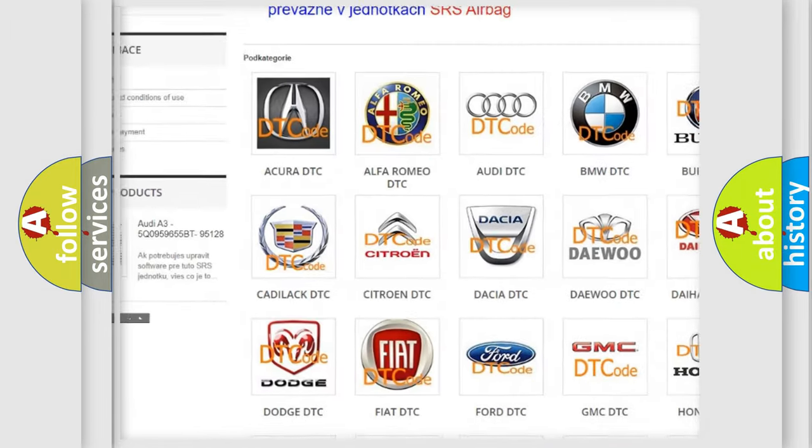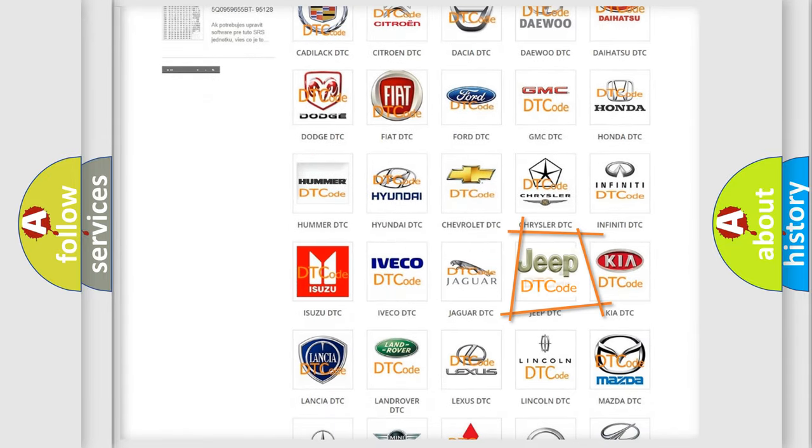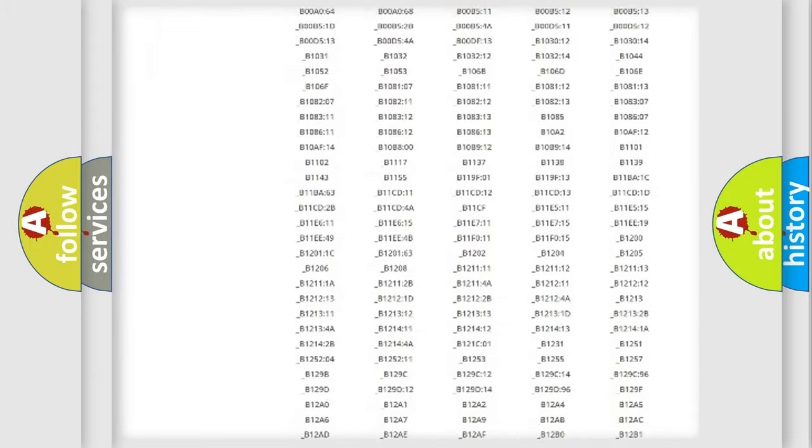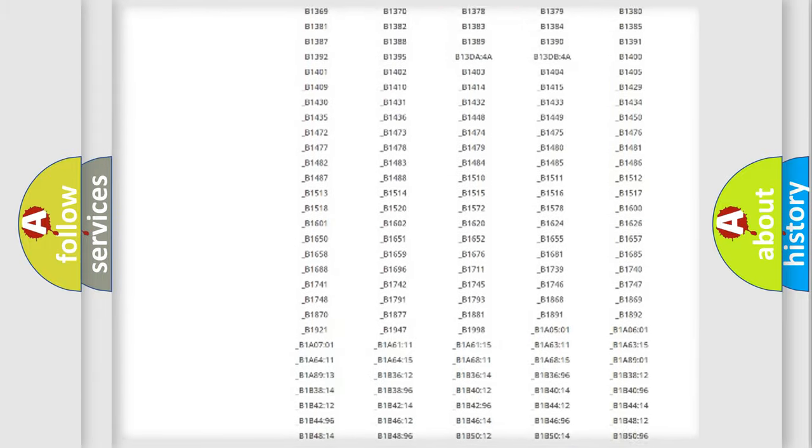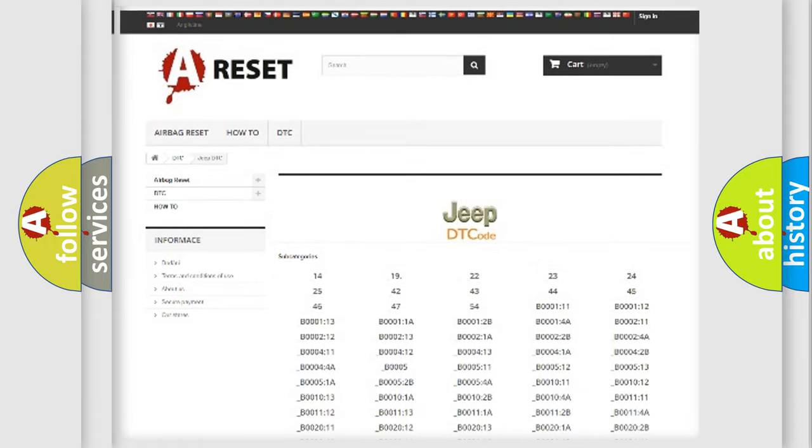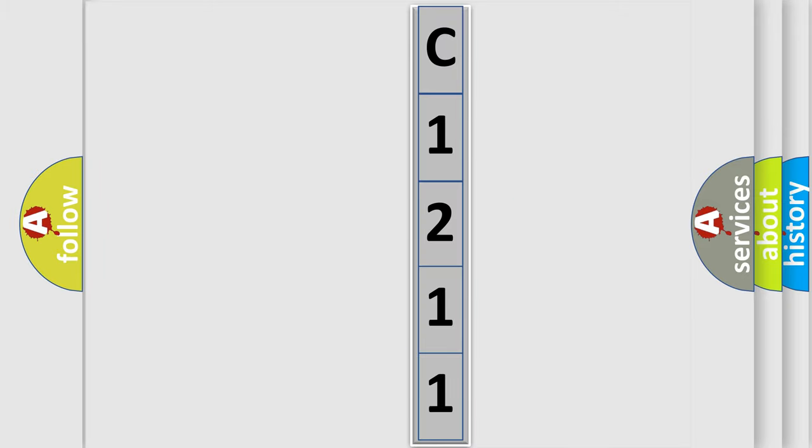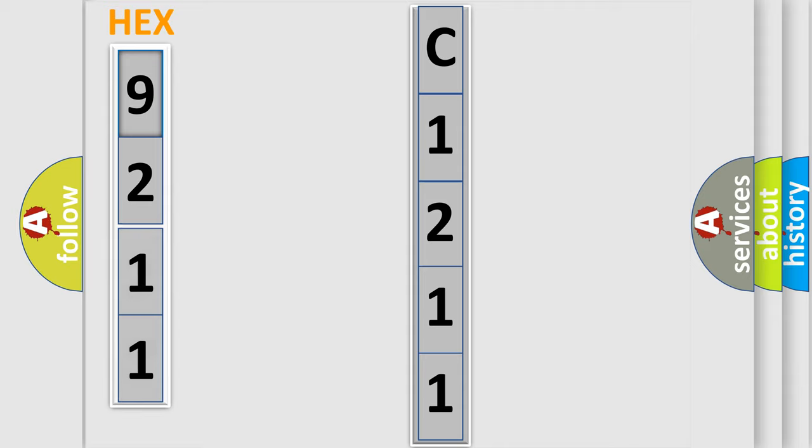Our website airbagreset.sk produces useful videos for you. You do not have to go through the OBD2 protocol anymore to know how to troubleshoot any car breakdown. You will find all the diagnostic codes that can be diagnosed in Jeep vehicles, also many other useful things. The following demonstration will help you look into the world of software for car control units.